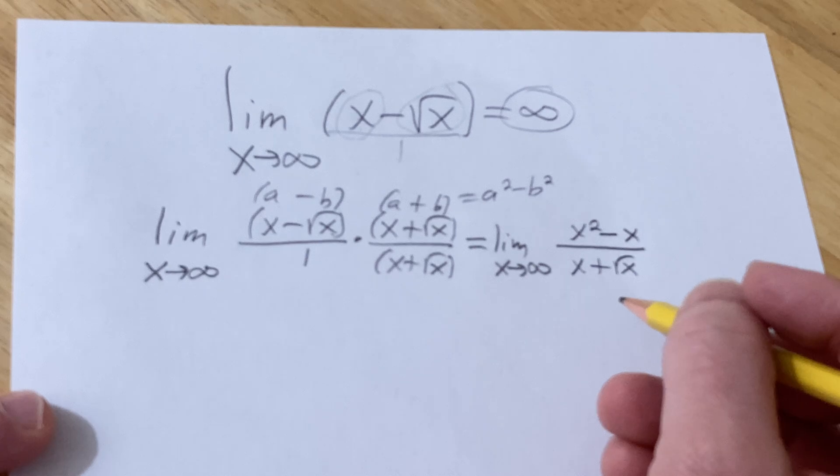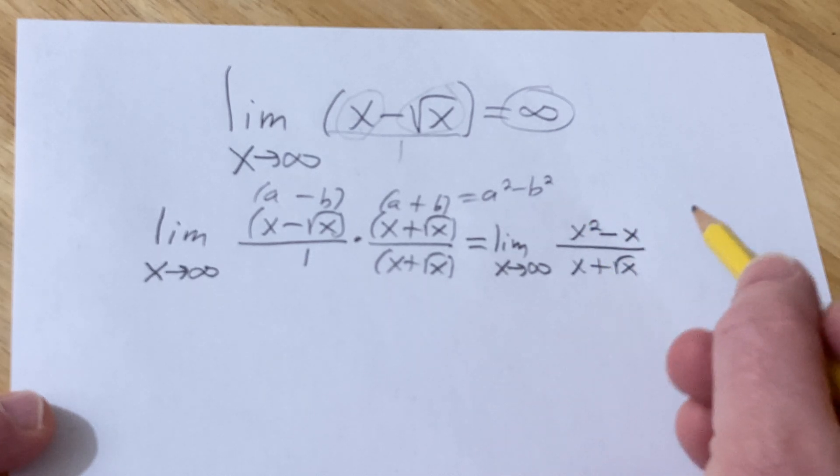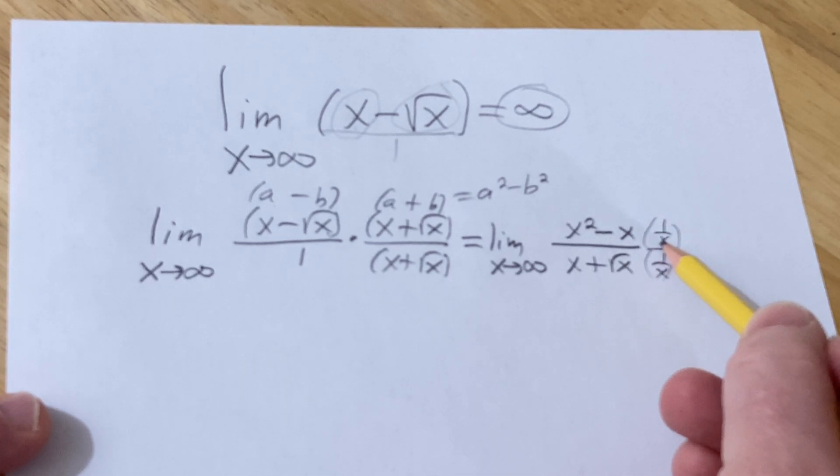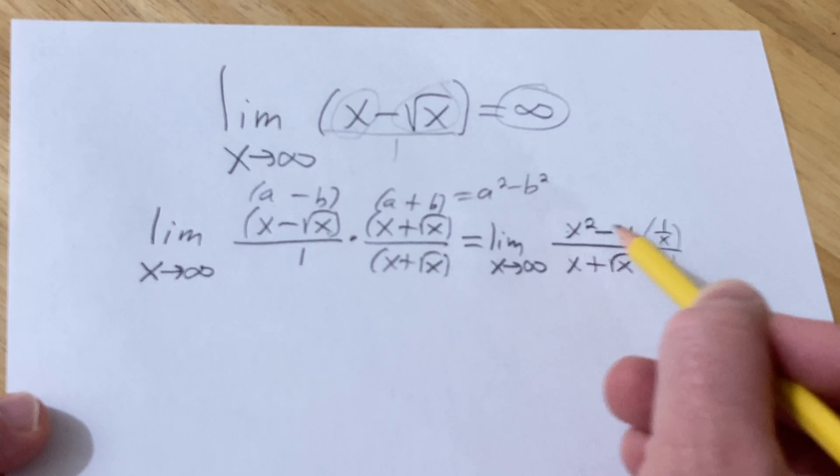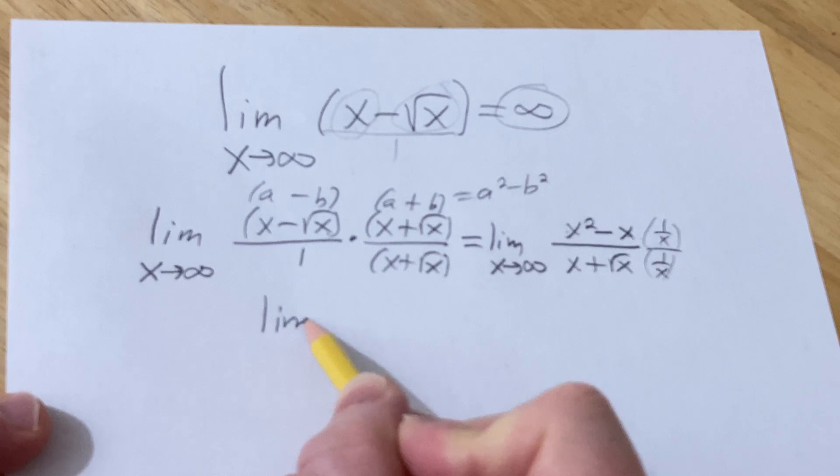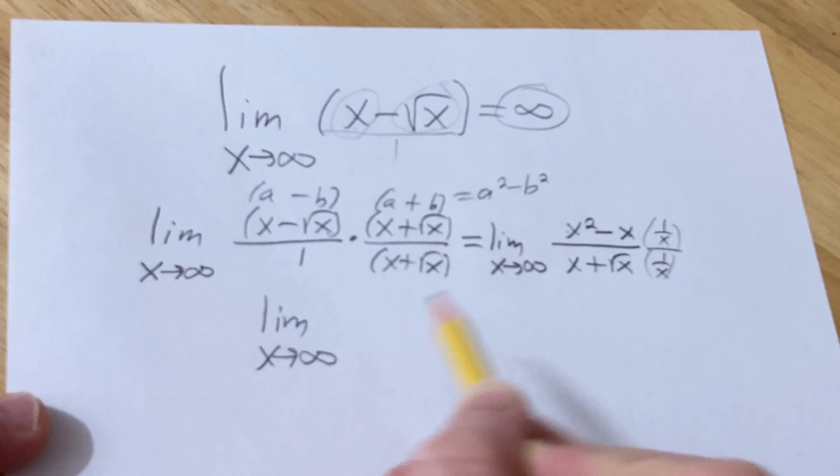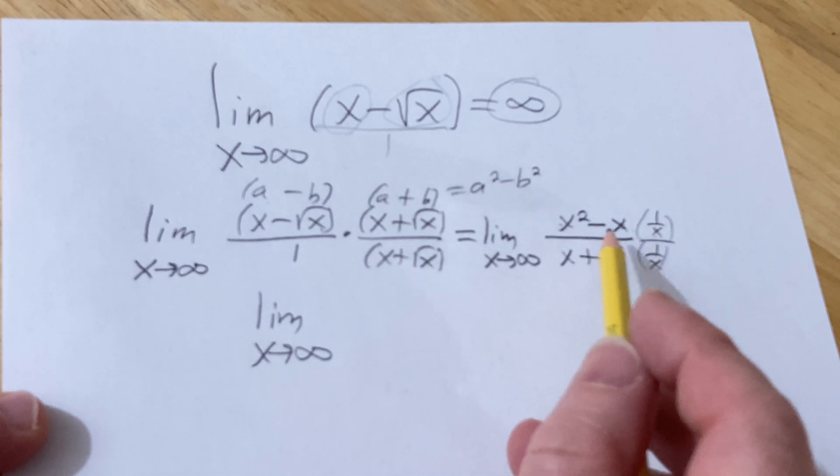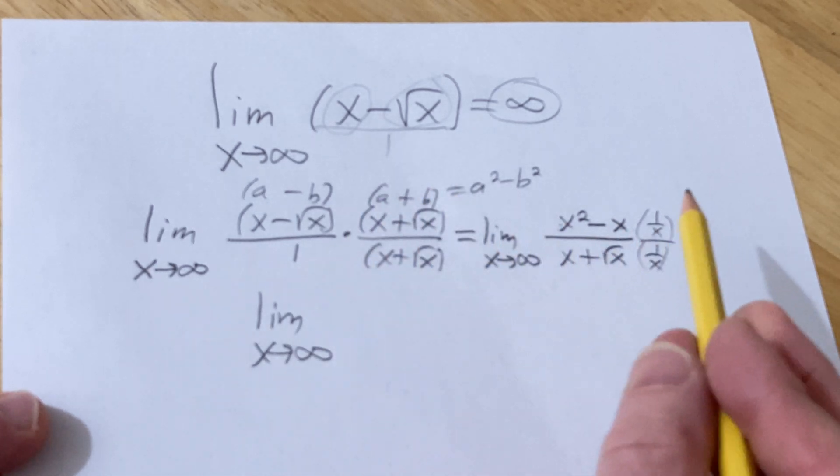Then what you can do is you can divide everything by x. Basically, you can multiply by 1 over x times 1 over x, basically multiplying by 1. It means you're dividing each term by x, because now you're going to multiply by 1 over x and distribute here. So this is the limit. And this is a common technique, by the way. This is much harder, but this is a technique that's worth knowing, because this comes up in other limits.